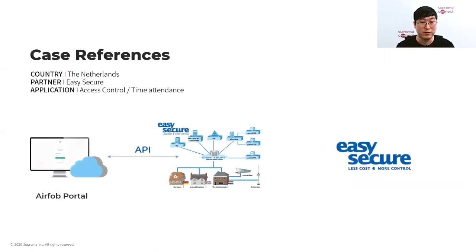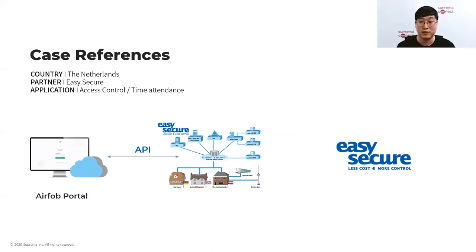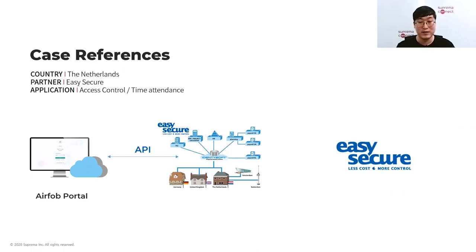Lastly, moving to Europe — EasySecure, one of our long-time partners from the Netherlands. In Europe they face difficulties using biometric time attendance solutions due to GDPR regulations, which make it increasingly difficult to use biometric data. They have been waiting for our mobile access solution as an alternative to avoid GDPR issues and are now working on integrating it into their platform. They expect mobile access to become a major credential in their market. The market is beginning to have more cases for mobile access.